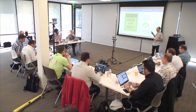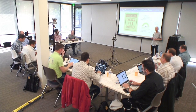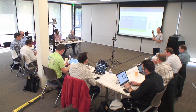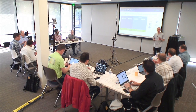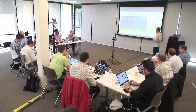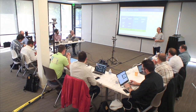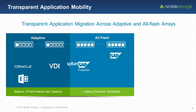Both platforms run the same version of Nimble OS, and they share the same data services. In this example, we have a scale-up cluster with four arrays: one pool of adaptive flash (hybrid) and one pool of all-flash. It's all managed as a single entity. We can click a button and place our applications on the type of storage that makes most sense at that time, and as service levels or needs change, we can dynamically — without any interruption to production — move applications from one form of storage to another.